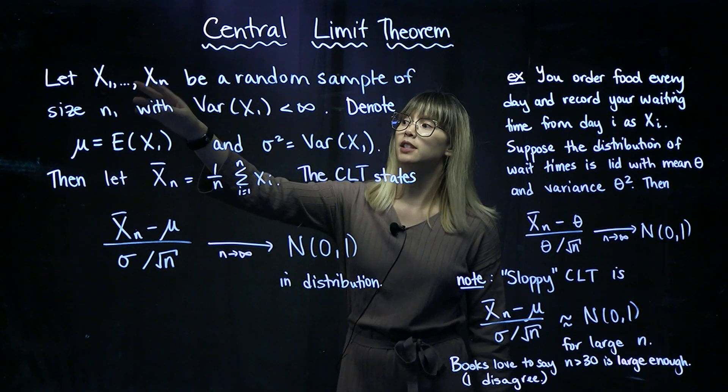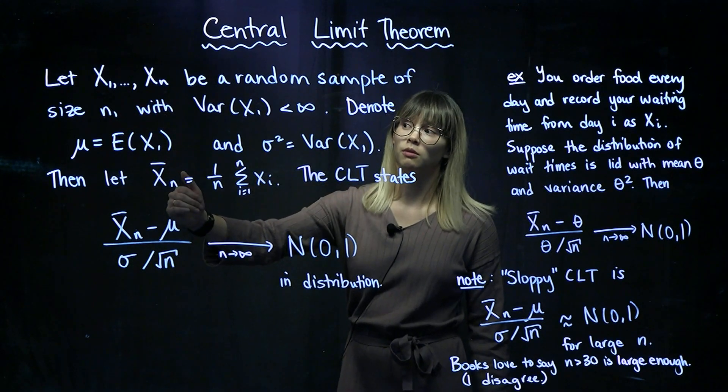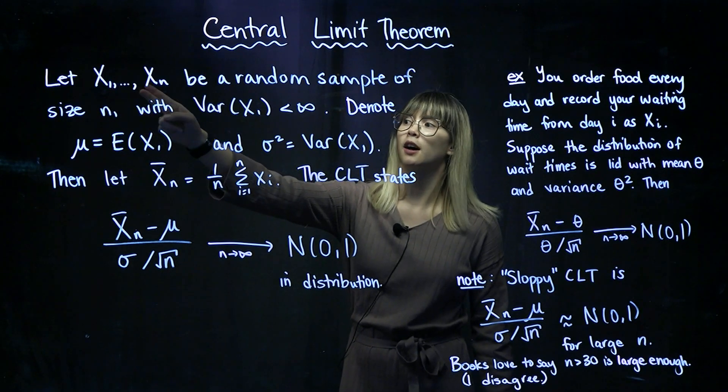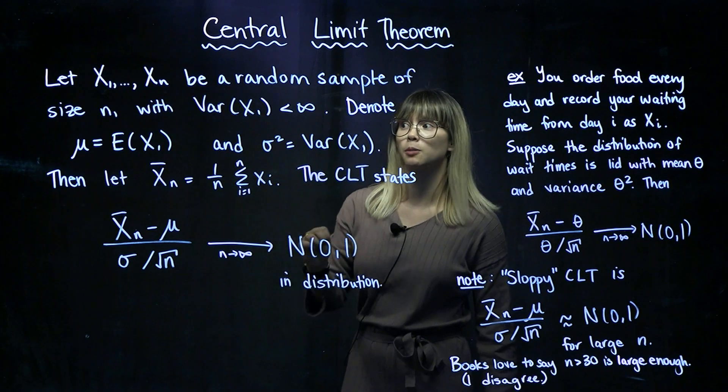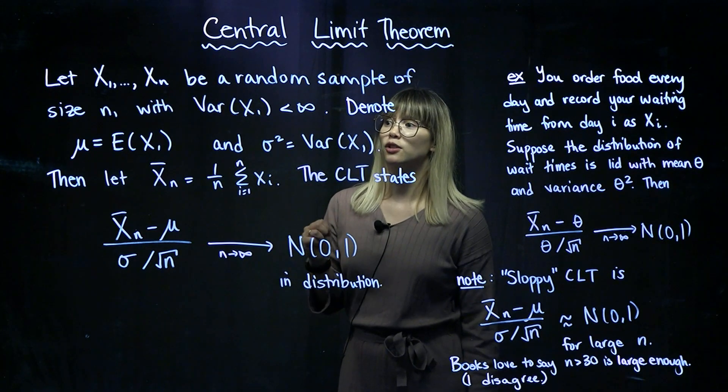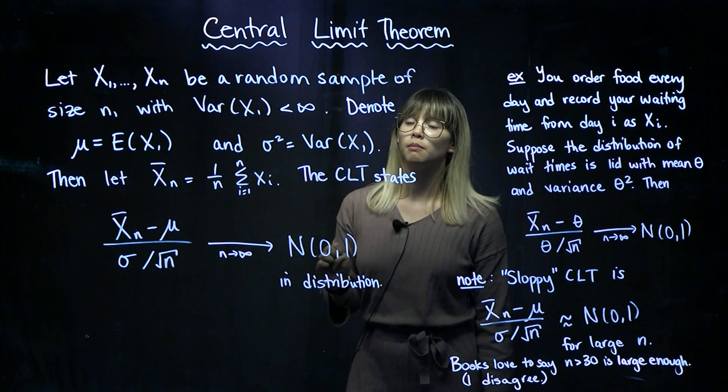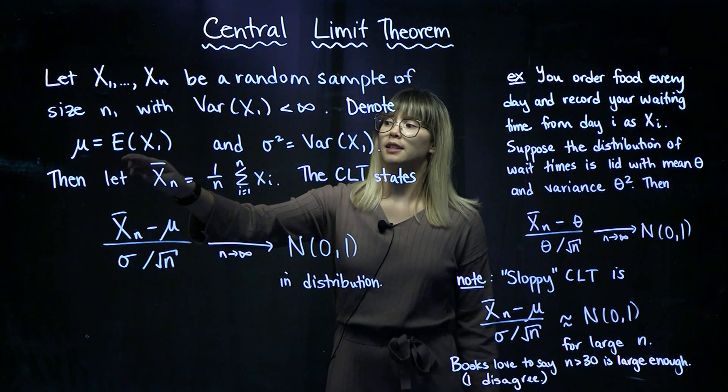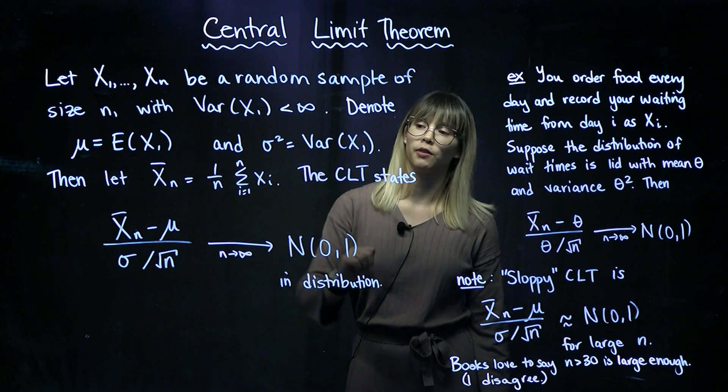But really, because it's a random sample, that means they all have the same distribution, which means the variance of X1 is the same as the variance of Xn, and the expected value of X1 is the same as the expected value of Xn. So really, we just need to check, is the variance of X1 finite? Now let's denote mu as the expected value of X1, and let's have sigma squared equal the variance of X1.